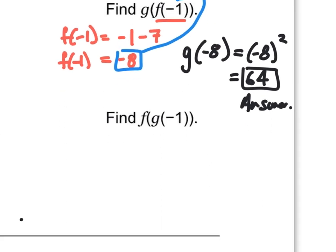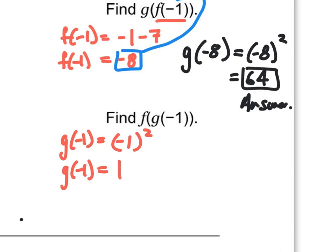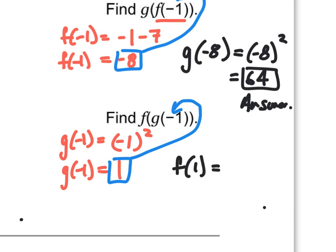Find f(g(−1)). First evaluate g(−1) = (−1)² = 1. Now plug 1 into function f: f(1) = 1 − 7 = −6. That's our answer.